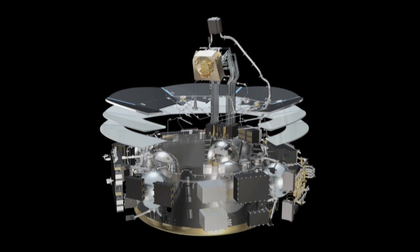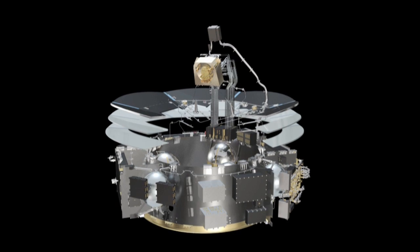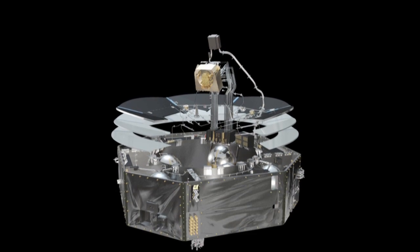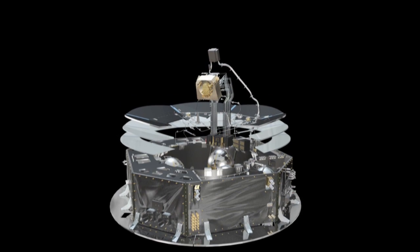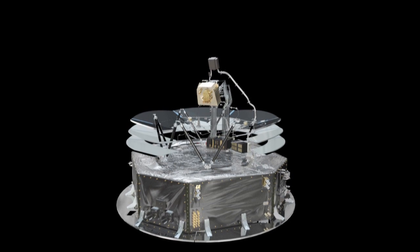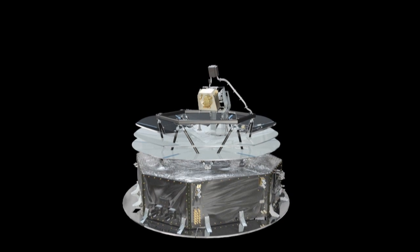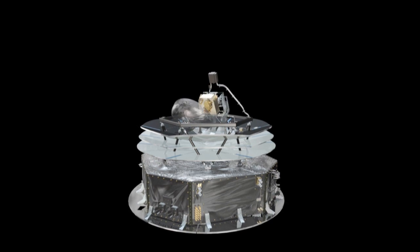The cooling system detectors and the mirrors sit on top of a service module, which contains all the hardware the spacecraft needs to function. A solar panel at the base of the spacecraft provides power and protection from direct sunlight.